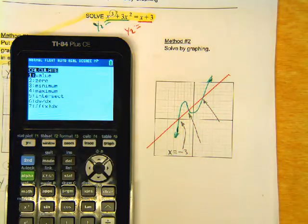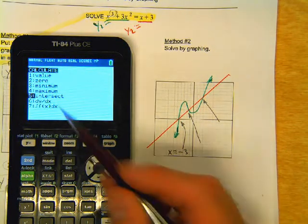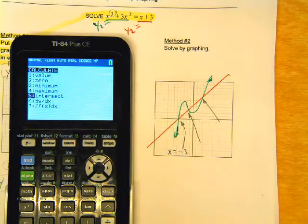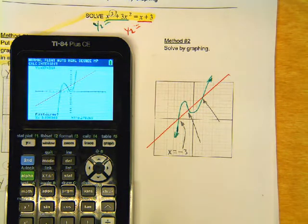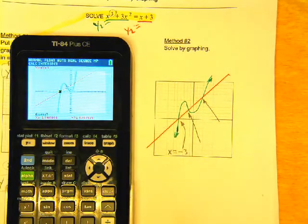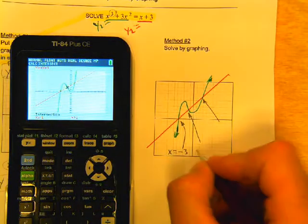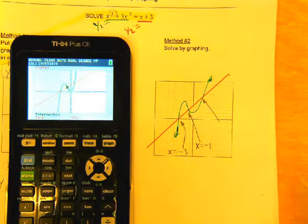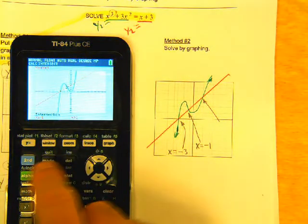Second trace to go into the calculate menu. Then you do number five, which is intersect. And then you answer the three questions. First curve, enter. Second curve, enter. And move your cursor near an intersection point and press enter. The next one is negative one.